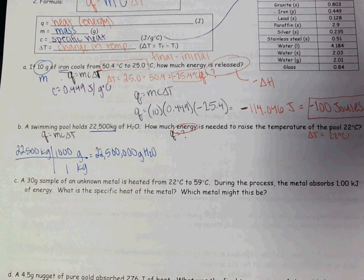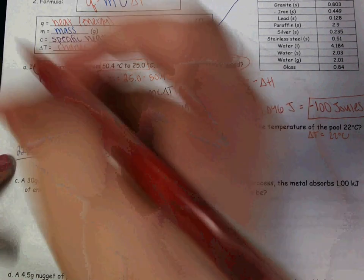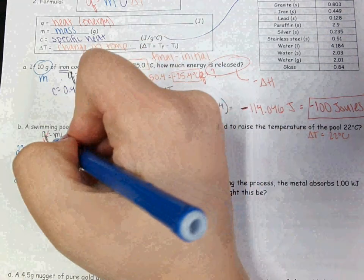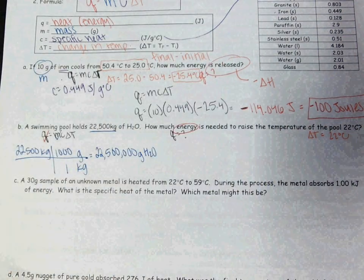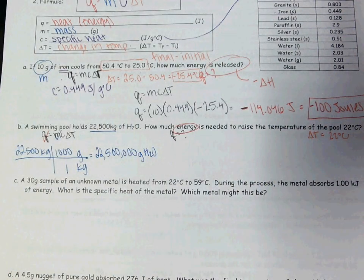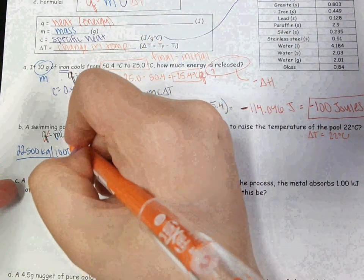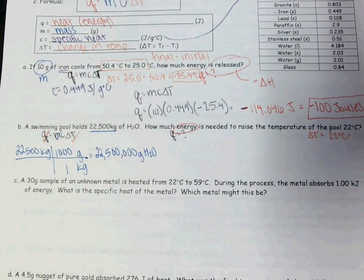So that is my mass. My Q value is what I'm looking for. My mass I've already calculated. My C value we'll come back to. And then my delta T was given to me as positive 22 degrees Celsius. How would I find a C value in this case?